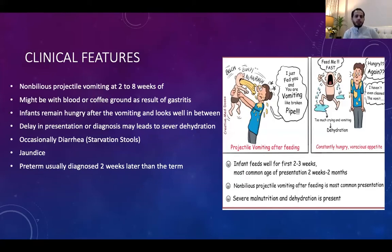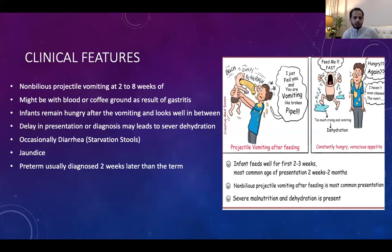Regarding clinical features, the cardinal presentation is non-bilious projectile vomiting, typically at two to eight weeks of age, sometimes presenting later in premature infants. The vomiting can be bloody or coffee-ground as a result of gastritis. Infants remain hungry after vomiting and between attacks. Delayed presentation can cause severe dehydration. Other features include diarrhea or jaundice.